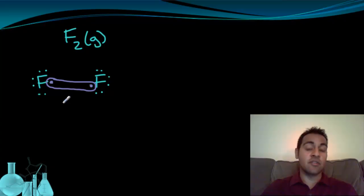So now the fluorine on the left has one, two, three, four, five, six, seven, eight valence electrons. And the one on the right has one, two, three, four, five, six, seven, eight for that one as well.